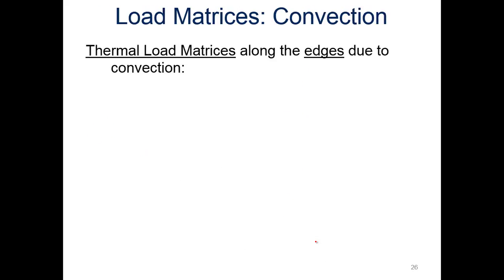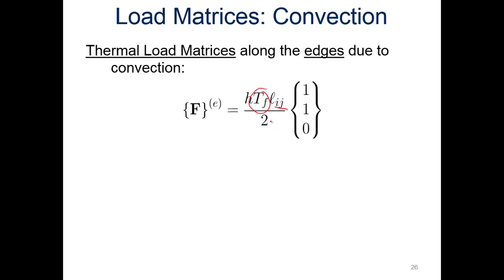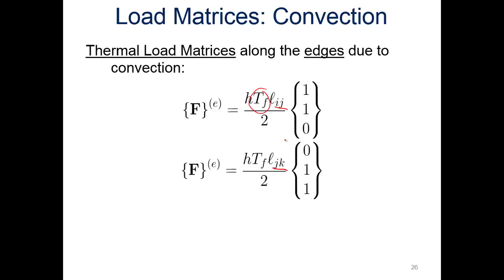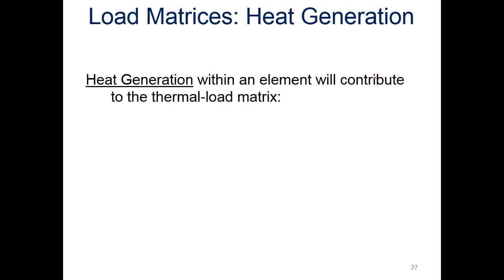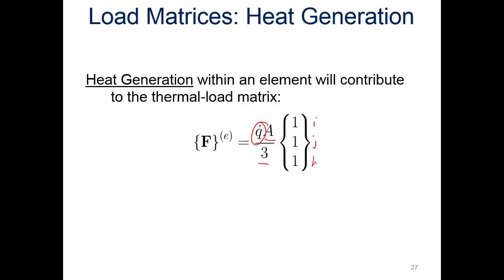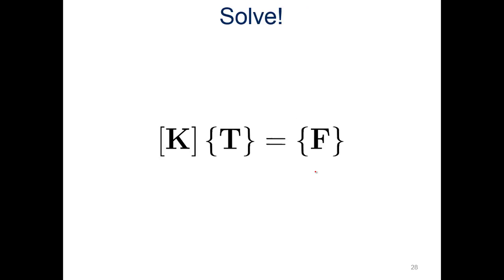For the load matrices with the triangular element, we have thermal loading due to convection. For edge I-J we add this forcing function; for edge J-K we use this forcing function; and for edge K-I we use the last one. Only I and J are included in the first, J and K in the second, and K and I in the third. For heat generation, we get Q-dot times the area divided by three, included at each node. We then solve it the same way we did the rectangular element.